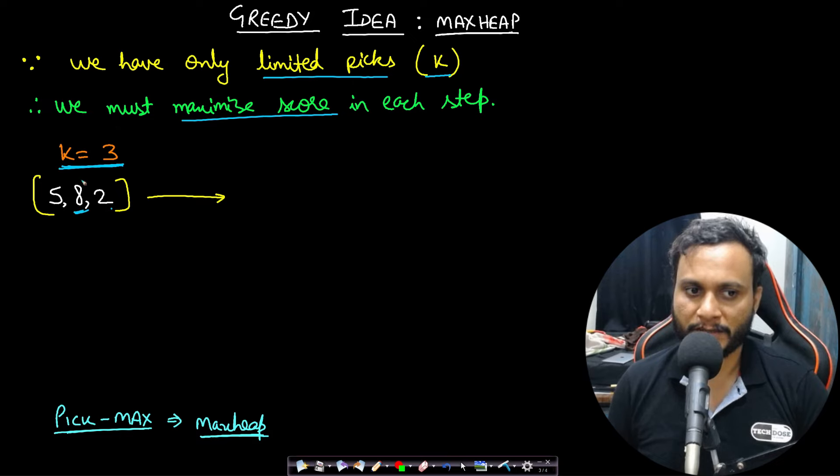Pick 8, and if you pick 8, then to the final score, let's say I take it as 0. I will initialize it with 0. I will be picking the max value.